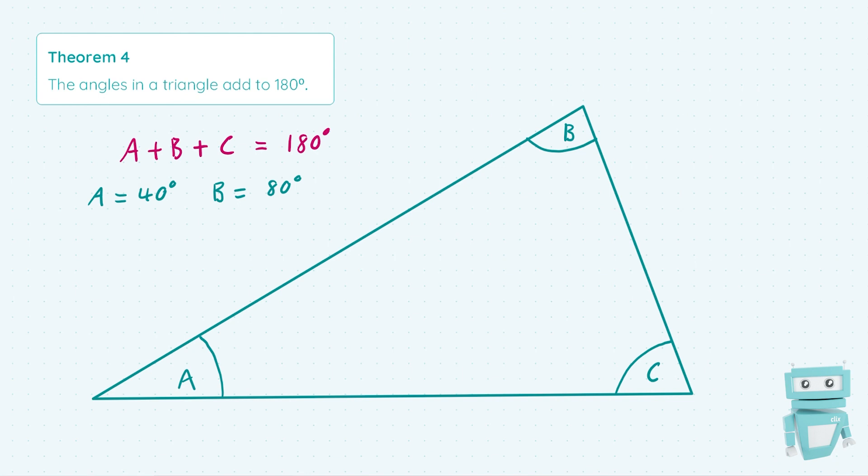we could figure out the value of C. Since 40 plus 80 equals 120, C equals 180 degrees minus 120 degrees, which means C equals 60 degrees in this case.